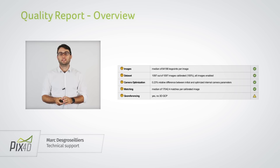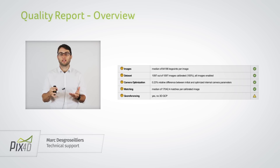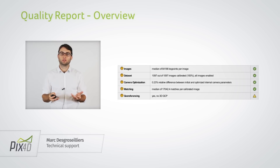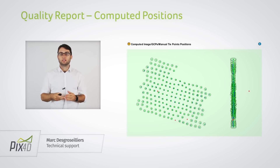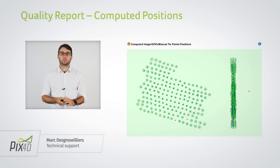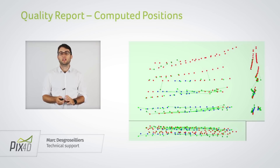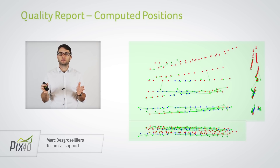There are graphics in the quality report that give you a quick overview of your project and highlight regions where you might have problems. The first is this graph where the blue dots are the original camera positions from GPS data and the green dots are the optimized camera positions. When they match well, that tells you these two pieces of data fit together — a good indicator that your reconstruction is good. What you don't want is red dots representing uncalibrated cameras and a large discrepancy between blue and green dots in all sorts of directions.